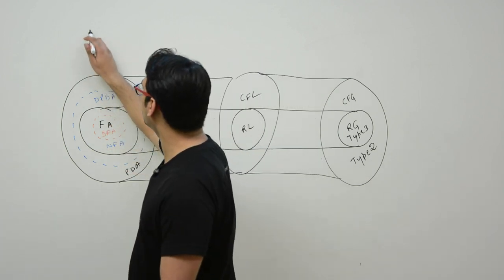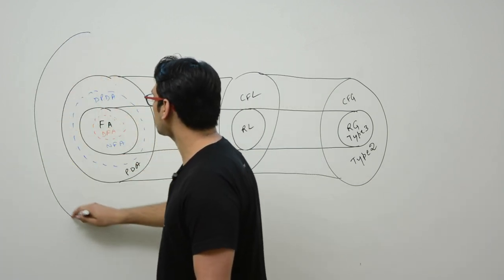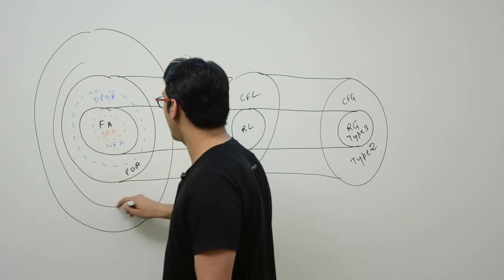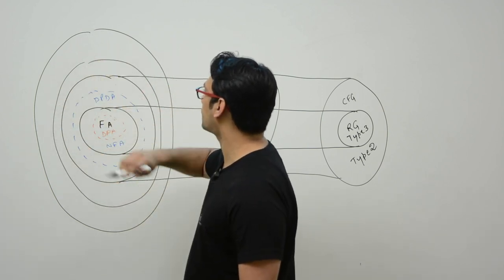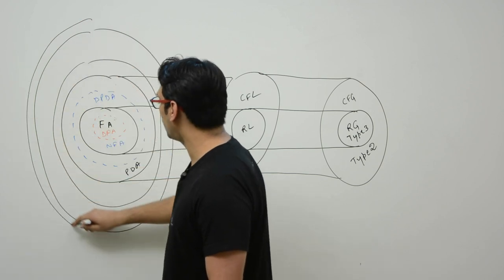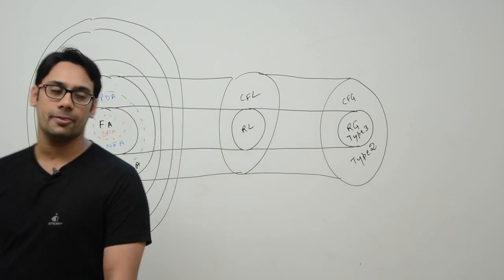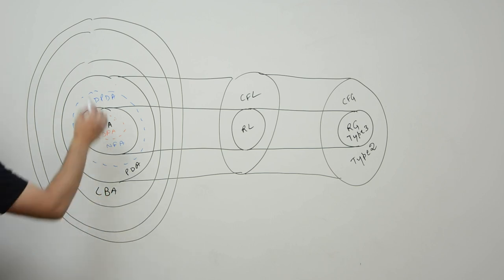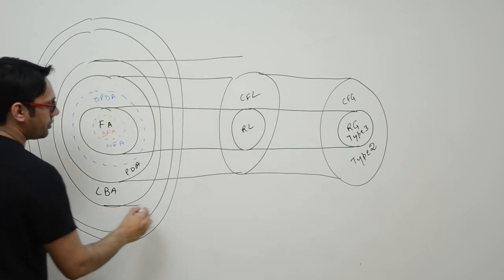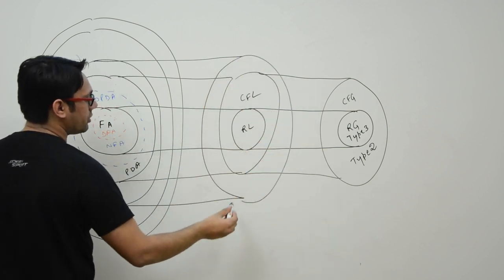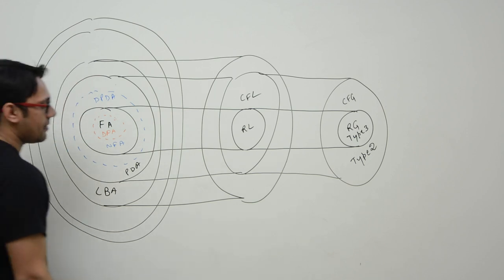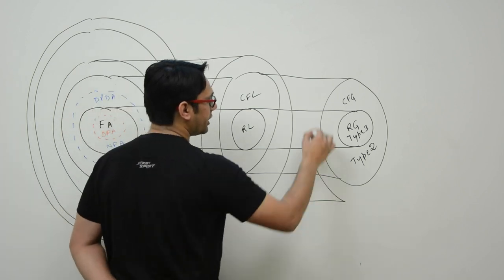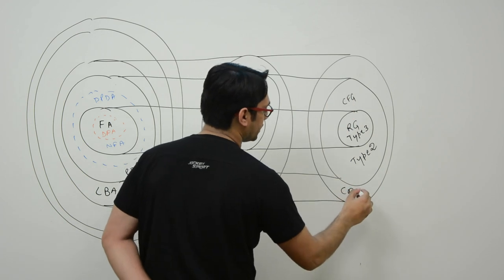Then there is something called Turing machine and linear bounded automata, or LBA. The Turing machine is of two types: number one is the halting Turing machine, and second is the Turing machine which may halt or may not halt. The languages accepted by linear bounded automata are called context-sensitive languages, and the grammars which generate these context-sensitive languages are called context-sensitive grammars.